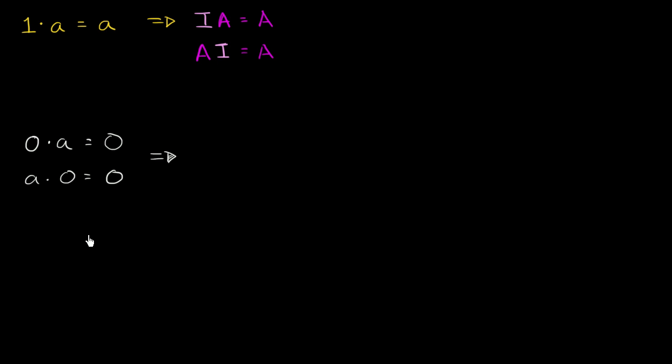Well, it would be some matrix that if I were to multiply it times another matrix, I get that same 0 matrix again. And that is what we call it. We call it a 0 matrix.